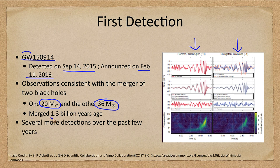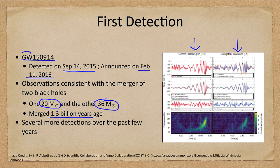This merger occurred 1.3 billion years ago. Gravitational waves travel very quickly, but across a large distance such as 1.3 billion light years it takes that long to reach Earth. So they were traveling through the universe for all that time and reached Earth on September 14th, 2015, giving us our first detection.